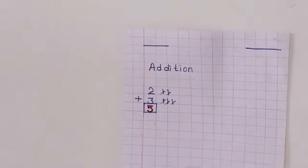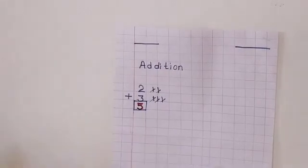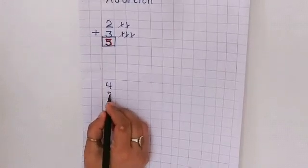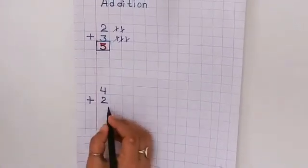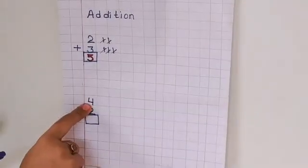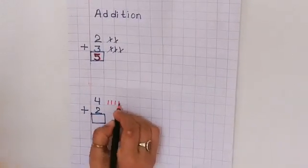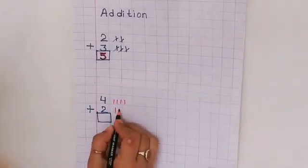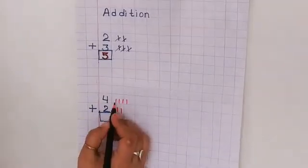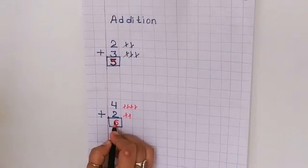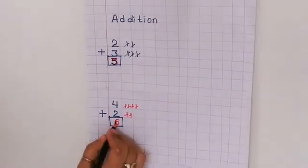Like the same process, I am writing here another example. Here I am writing four and two, with the symbol of addition, and making a box. The first number is four, so you have to draw four lines — one, two, three, four. And the second number is two — one, two. Now count them together — one, two, three, four, five, six. So our new number is six. Means our addition answer is six.